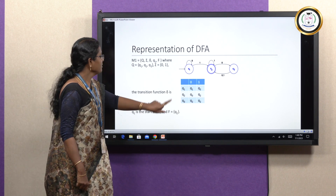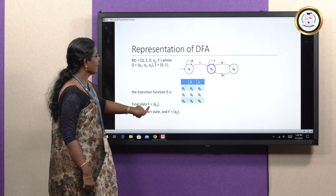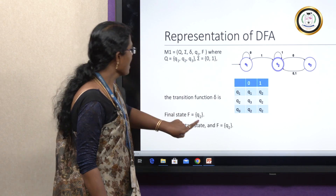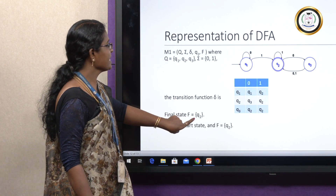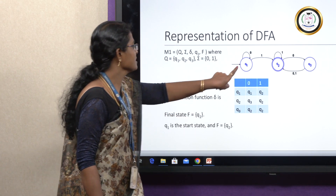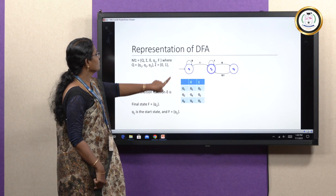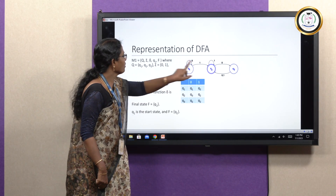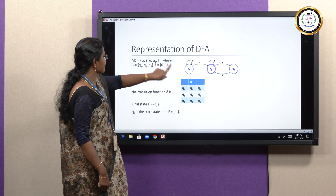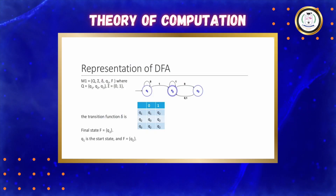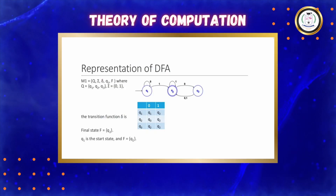From the given transition table, the starting state is Q₁ and the final state F is Q₂. The input symbols are 0 and 1, and the set of states Q is {Q₁, Q₂, Q₃} with Σ = {0, 1}. Thank you.